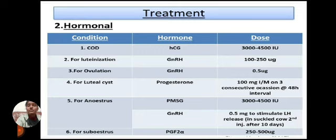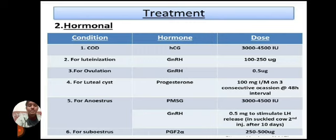Hormonal treatments: For cystic ovarian disease (COD), hormonal injections such as hCG are given at a dose of 3,000 to 4,500 IU. For luteinization, GnRH is used; for ovulation, GnRH is also indicated. For luteal cysts, progesterone is used. For anestrus, PMSG and GnRH are indicated. For sub-estrus, PGF2-alpha is the treatment of choice.